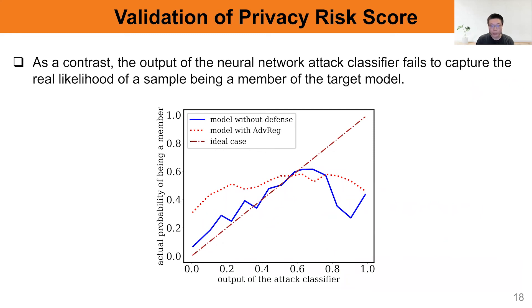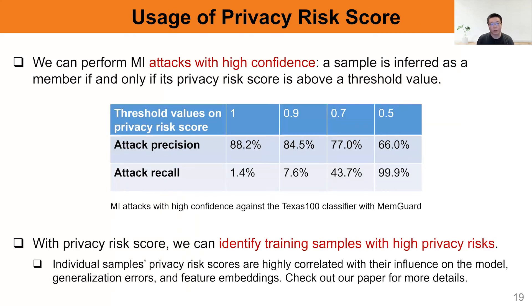As a contrast, the output of the neural network attack classifier fails to capture the real membership probability. Now, with privacy risk scale, we can perform membership inference attacks with high confidence. We infer a sample as a member if and only if its privacy risk scale is above a threshold value. The table in the middle shows that if we set a larger threshold value on the privacy risk scale, we have a higher attack precision, but at the same time a lower recall value. Furthermore, with privacy risk scale, we can identify which training samples have high privacy risks. In our paper, we also analyzed the correlation between privacy risk scales and model properties, including data sample influence, generalization errors, and feature embeddings.